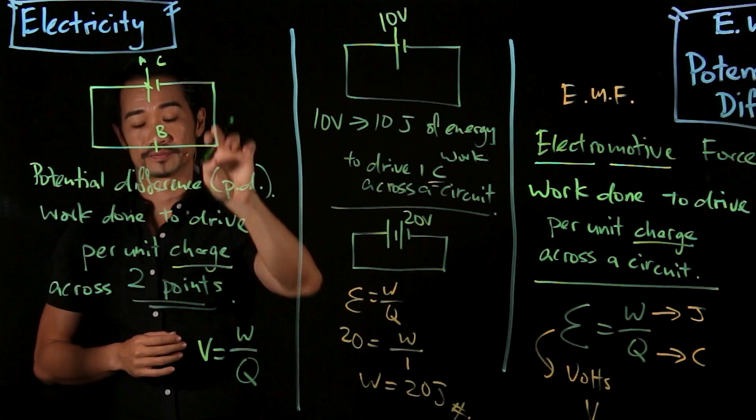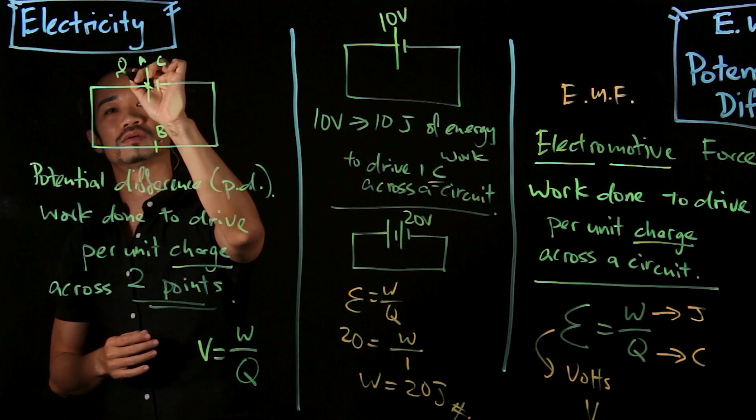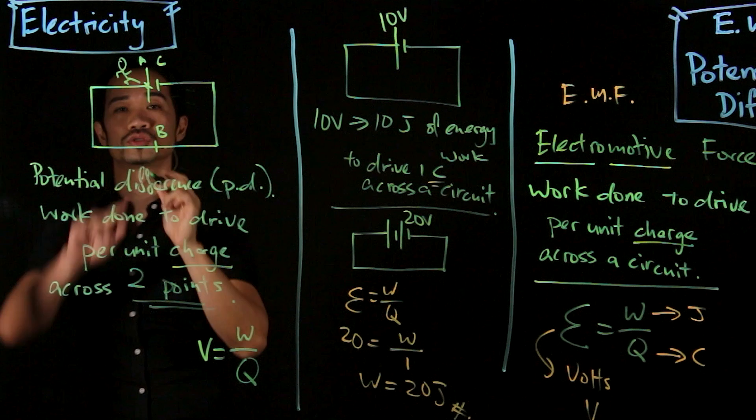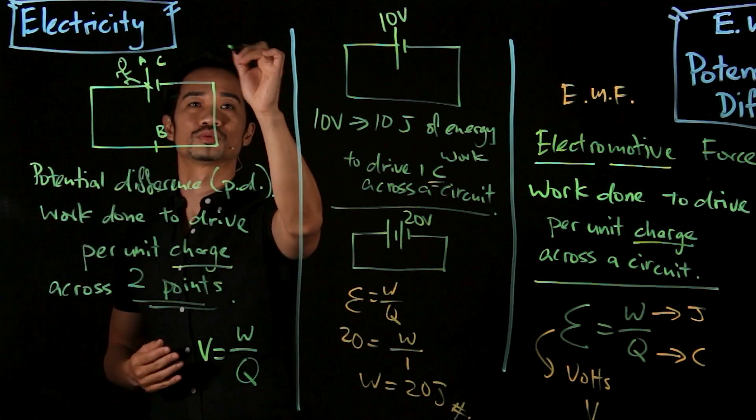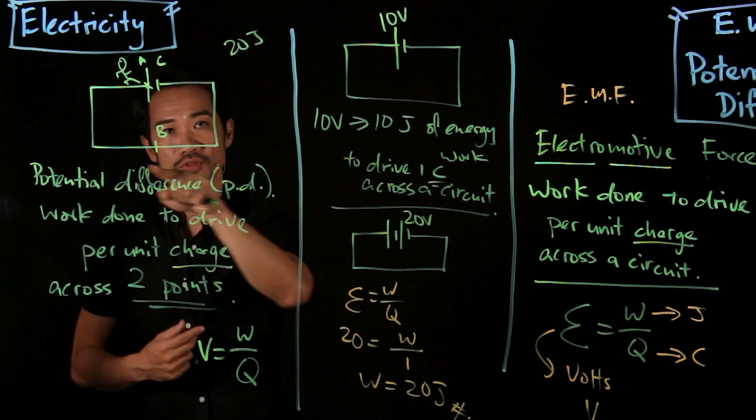So what this means is quite simple. Just imagine this is a running track. So I have a runner that is running. So to finish the whole track, let's say if the runner uses 20 joules of energy—I've done 20 joules of work to run through the whole track.